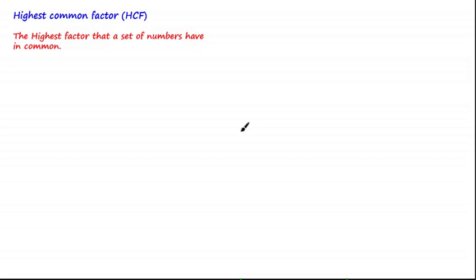Hi guys and welcome to this tutorial on finding the highest common factor and the lowest common multiple. These are two very important findings in mathematics which are very useful for simplifying fractions and performing operations with fractions, which is a large part of the course. So it's certainly worth understanding what they are and how to find them within a set of numbers.